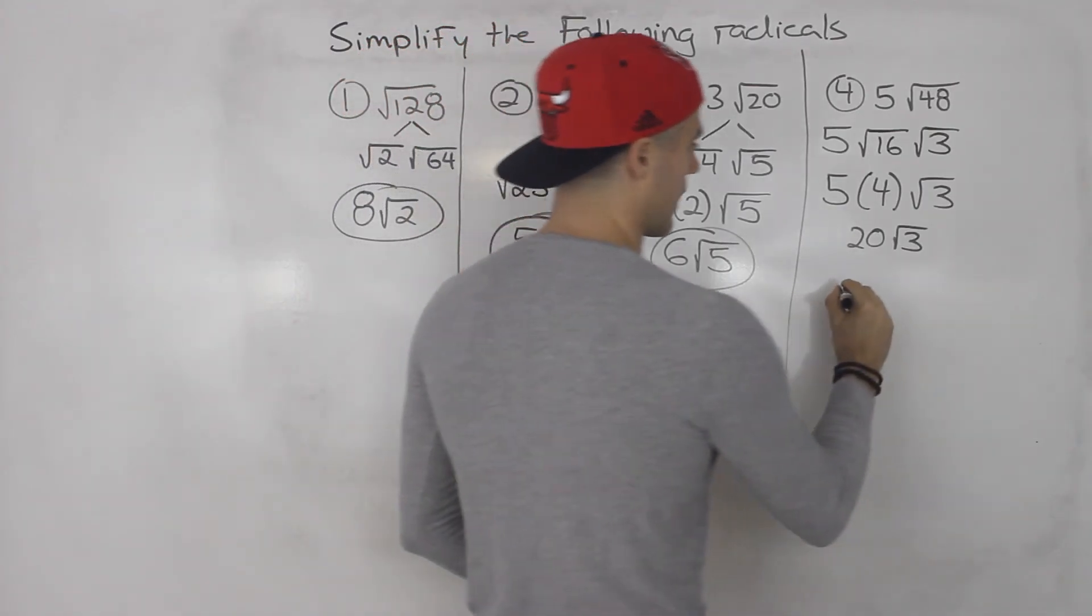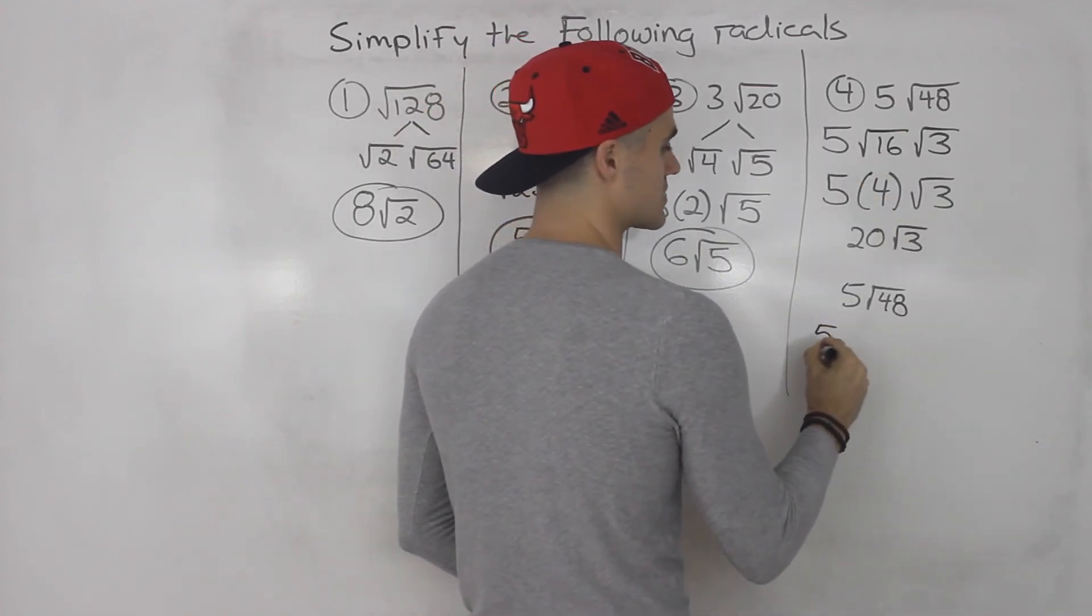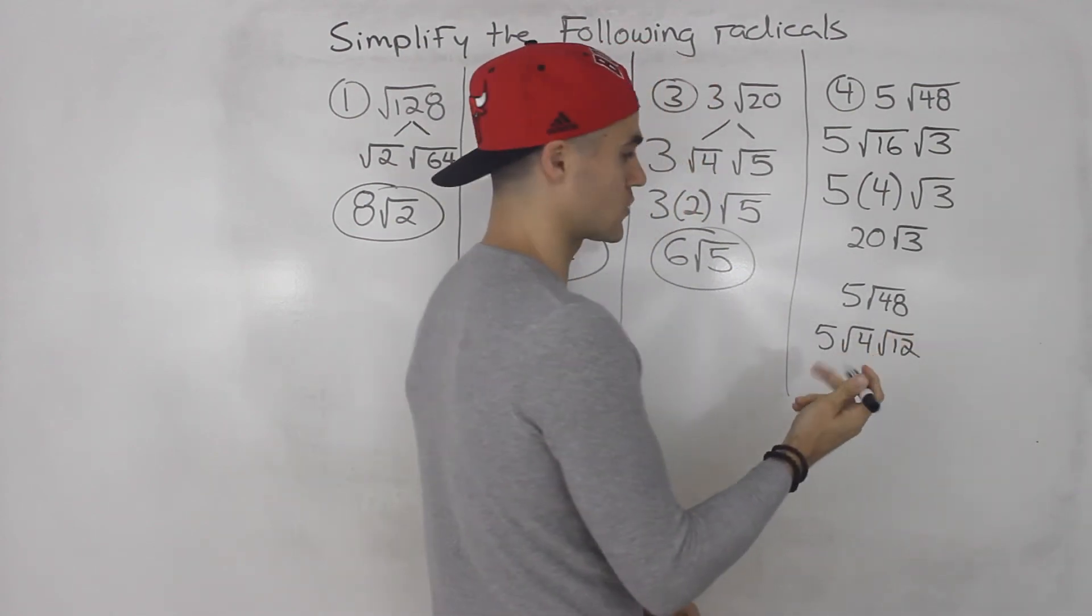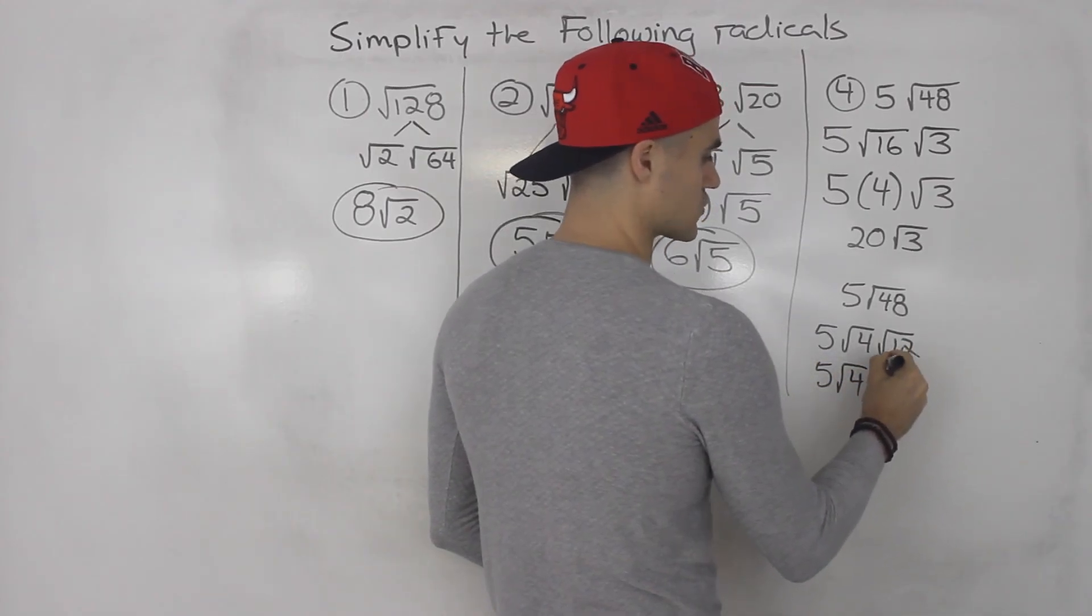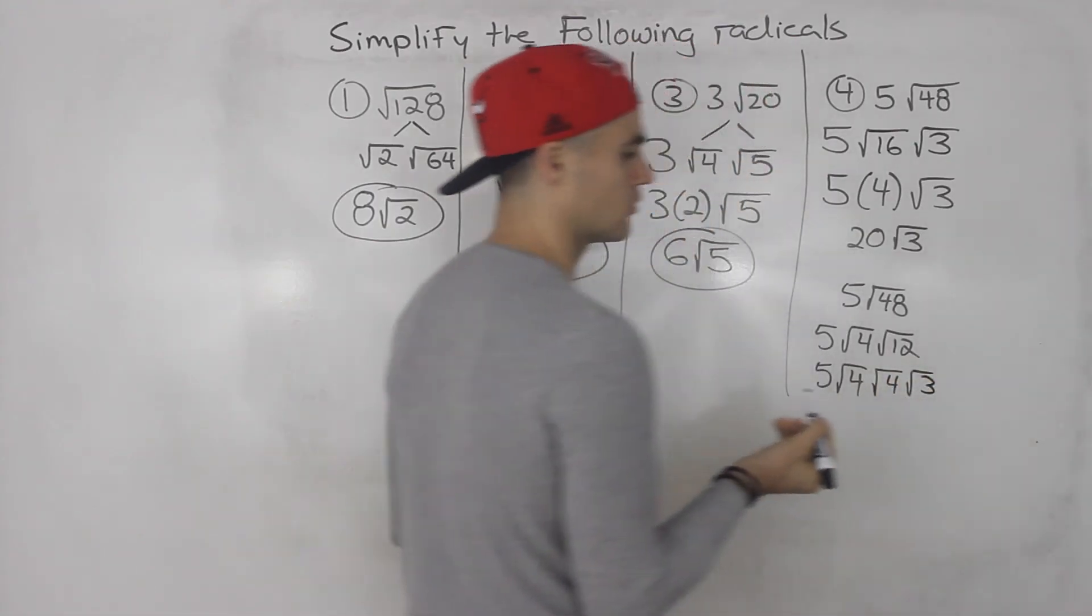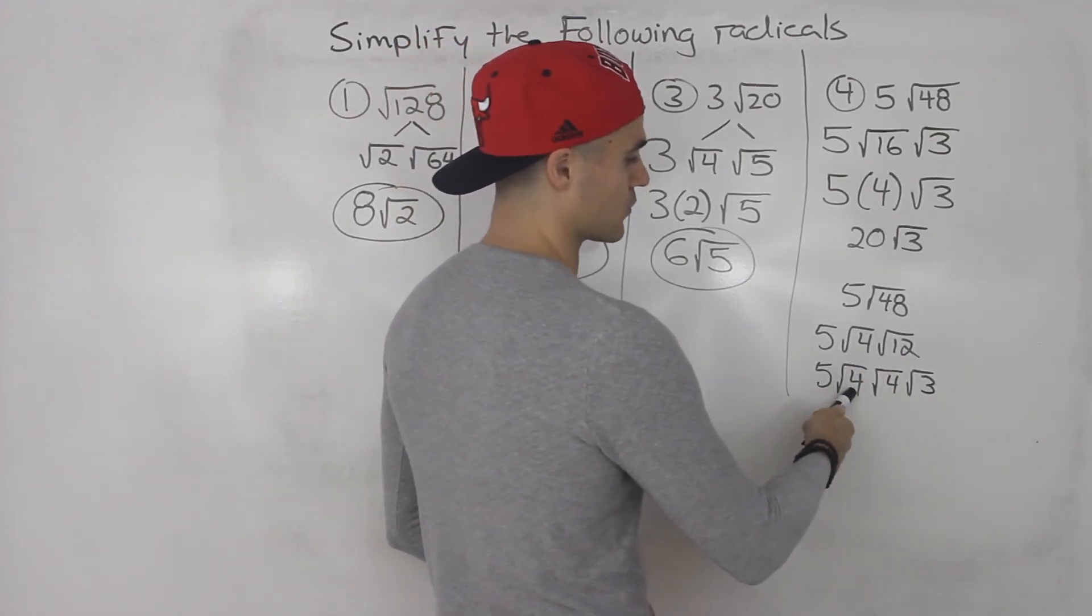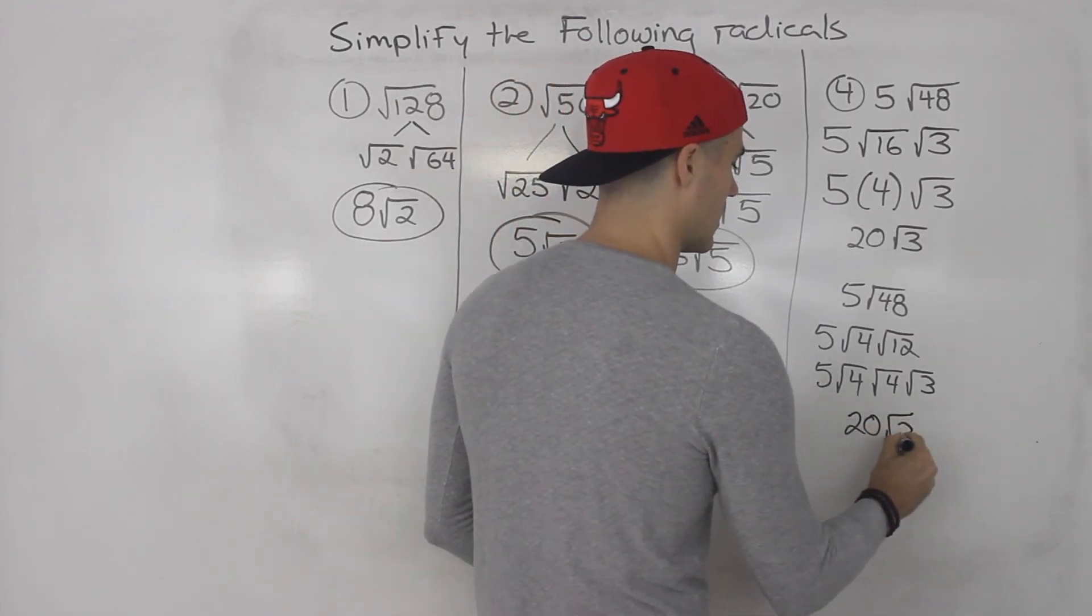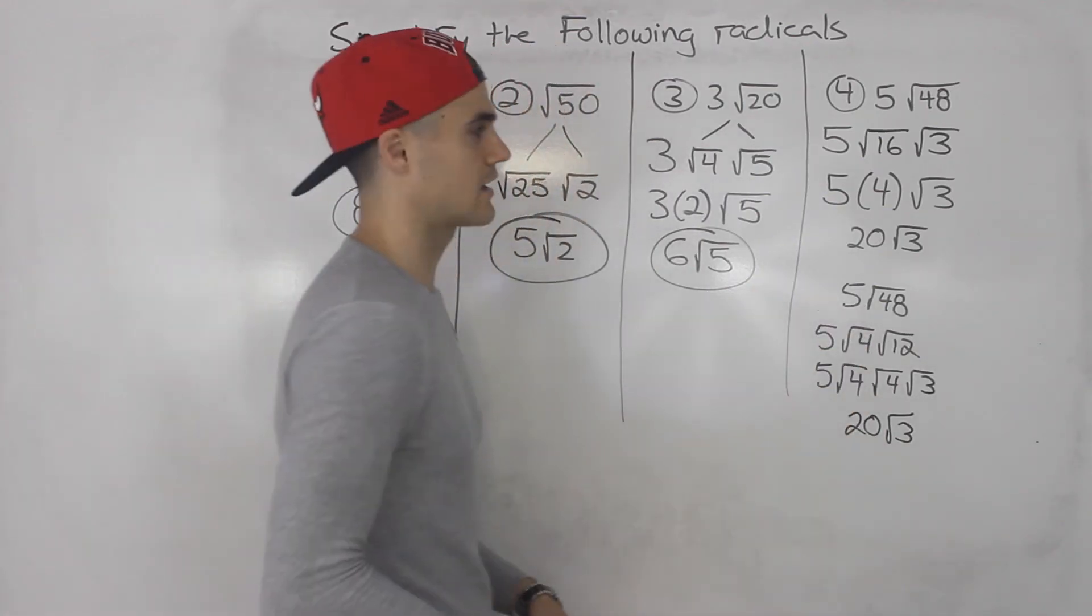Now, what if we had 5 root 48, and instead of doing root 16 right away, we did root 4 instead. So we'd have 5, root 4, and then we'd have root 12. Because 4 times 12 gives us 48. Well, we got the square root of 4 here. And then this square root of 12 here, we can split that up further into root 4 times root 3. See that? 4 times 3 gives us 12. And now the square root of 4 is 2. Square root of 4 is 2. So 2 times 2 is 4. Times 5 gives us 20. And that root 3 we can't do anything about. So we still end up getting the same answer. We just have to take an extra step.